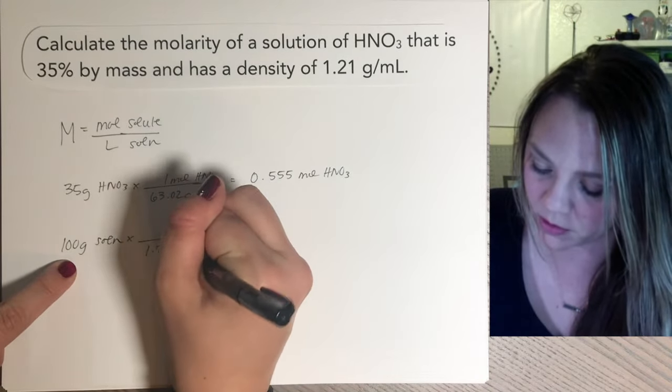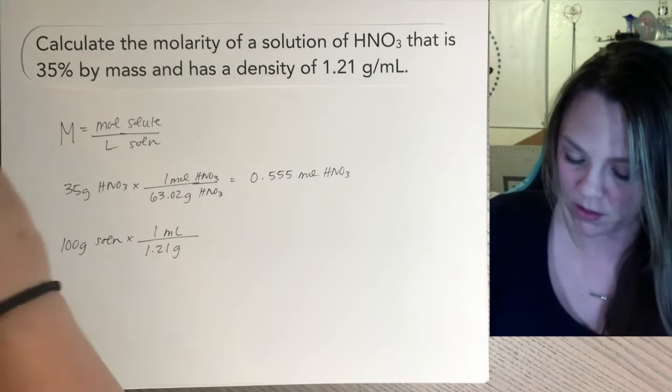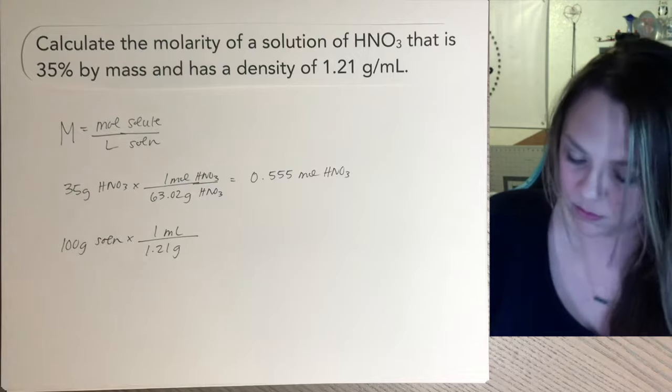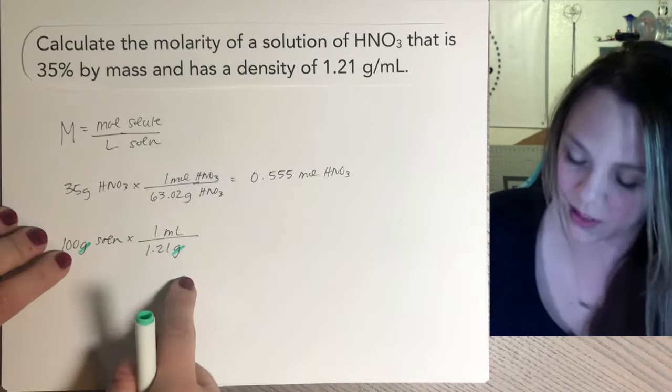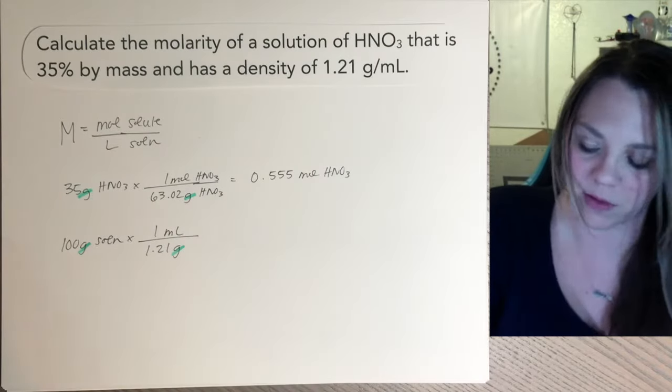So we start with our density, but now I want to get out of grams. So put 1.21 grams on the denominator for every one mil. This way grams and grams will cancel. Same thing here. Grams and grams canceled. That's why I got moles as my final unit.